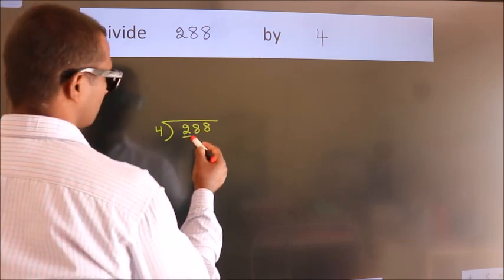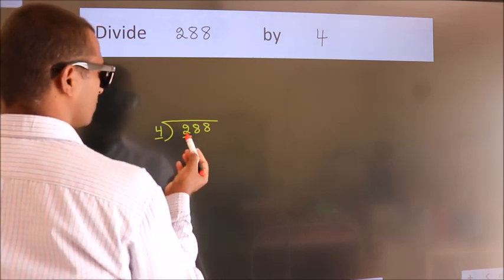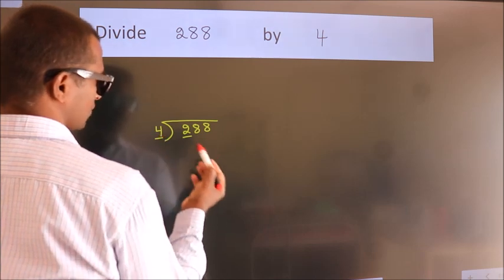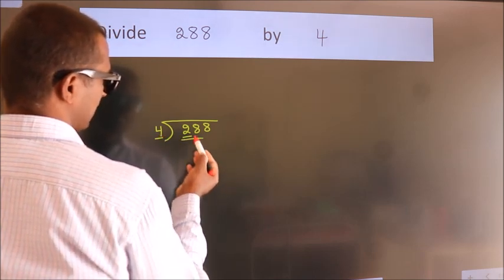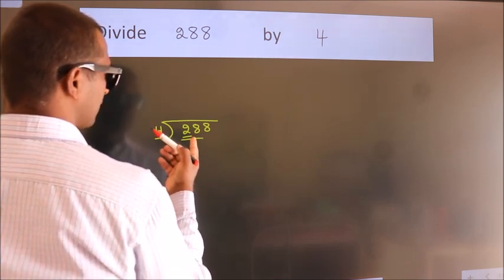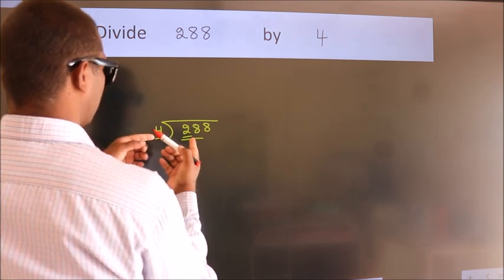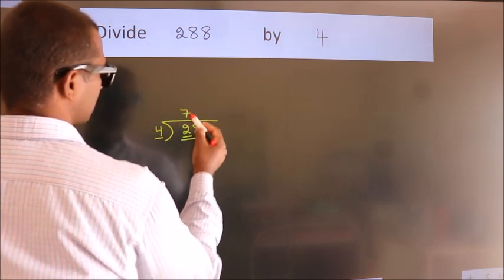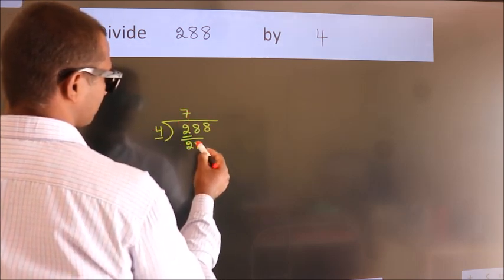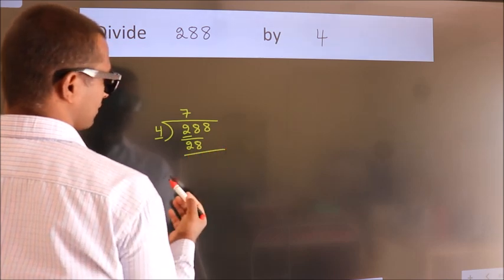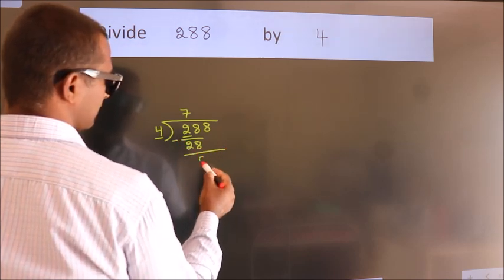Here we have 2, and here 4. Since 2 is smaller than 4, we should take 2 numbers: 28. When do we get 28 in the 4 times table? 4 sevens are 28. Now we subtract and we get 0.